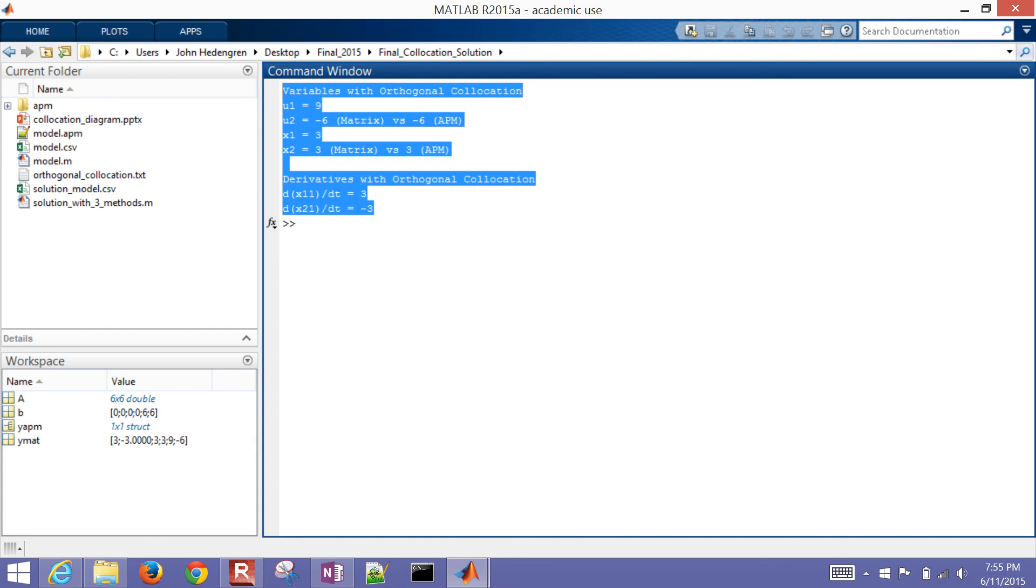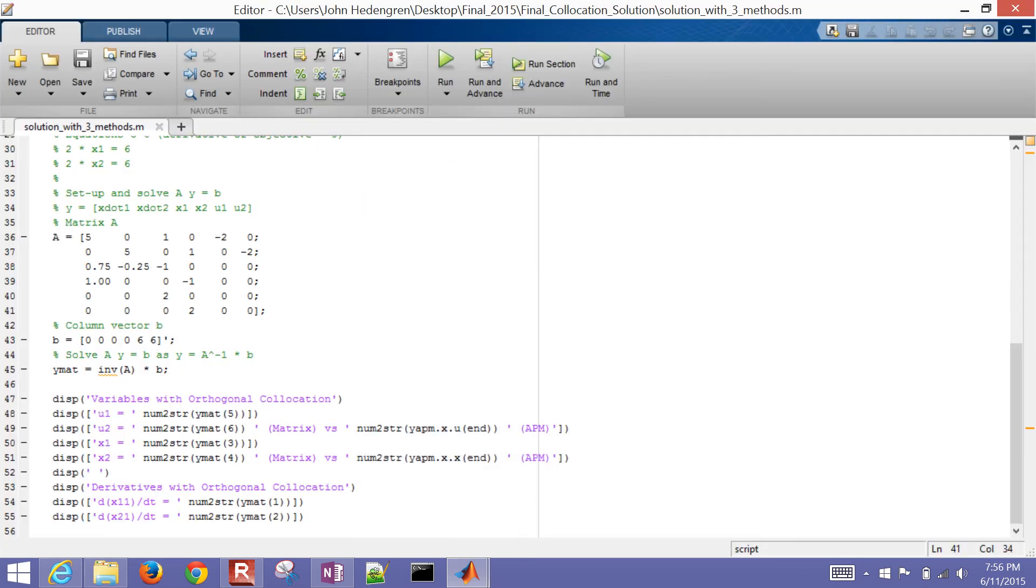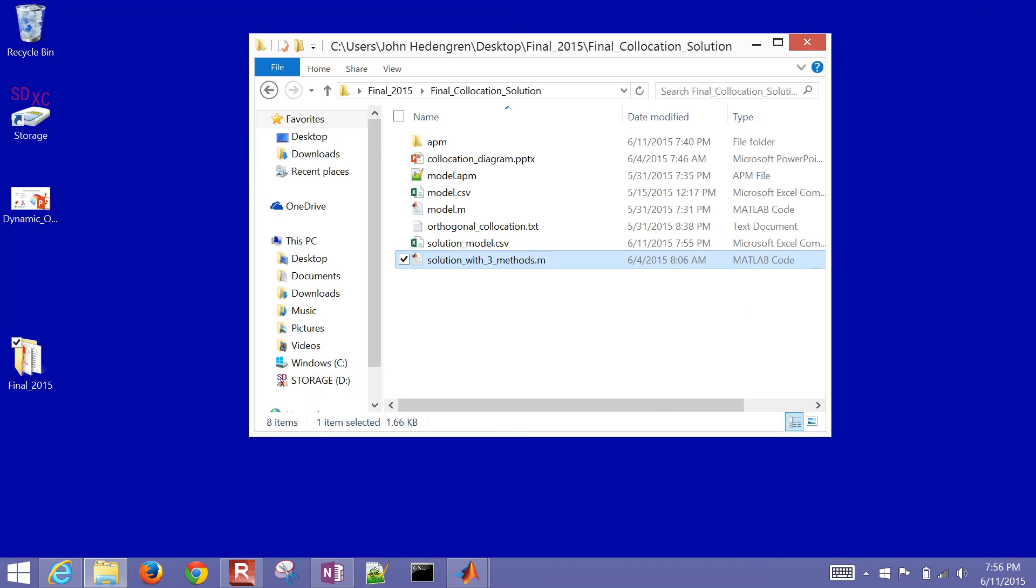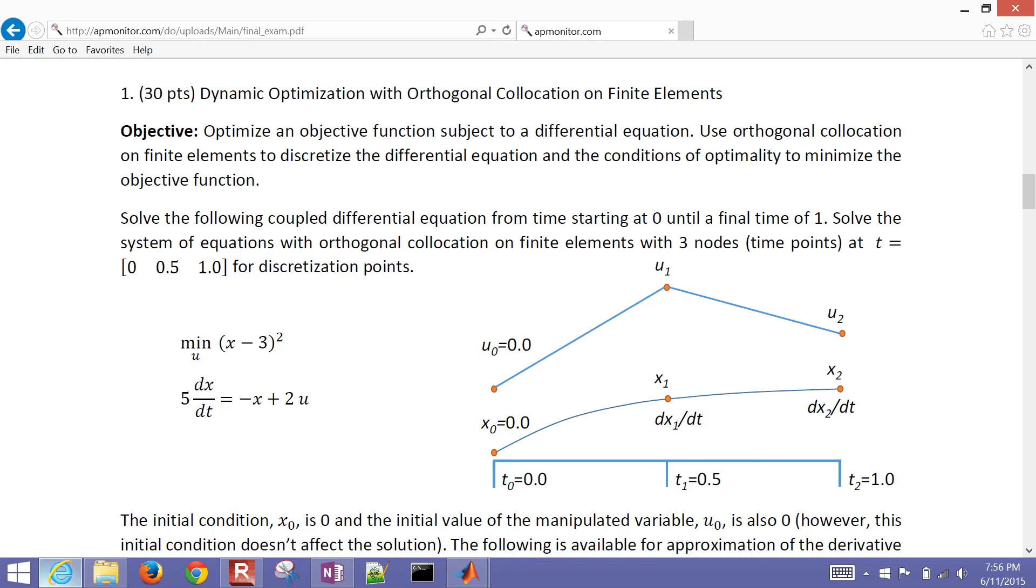Okay, and those are shown there. Now we'd also solve this via the script that I've given just to confirm the solution that APMonitor was giving as well. Okay, so that concludes this problem. Let me just go ahead and briefly review this again. So we solved with dynamic optimization, dynamic optimization with orthogonal collocation on finite elements. And we optimized this objective function subject to the differential equation.